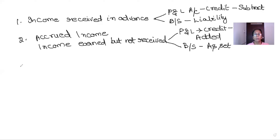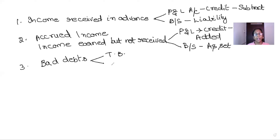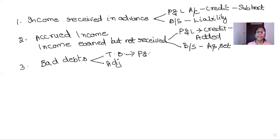A very important adjustment is bad debts and provision for doubtful debts. Bad debts represent money not collected from debtors — when debtors fail to pay by the given date. Bad debts given in the trial balance have already been taken into the books of accounts, so they are debited to the P&L account and should not be reconsidered in the balance sheet.